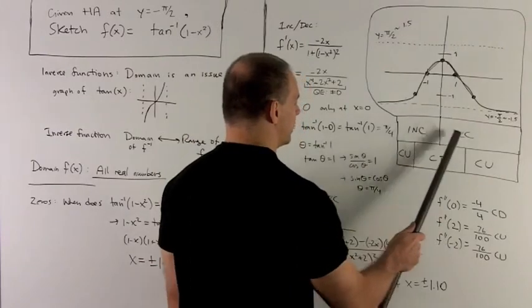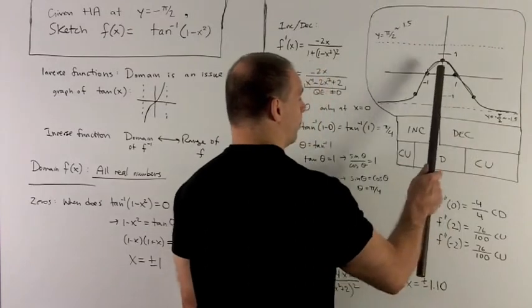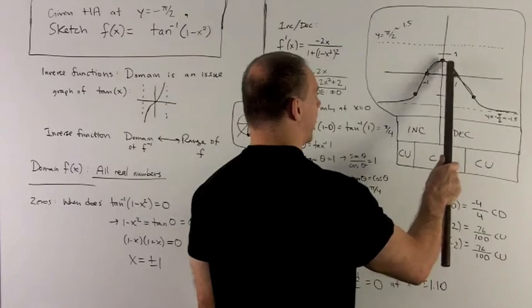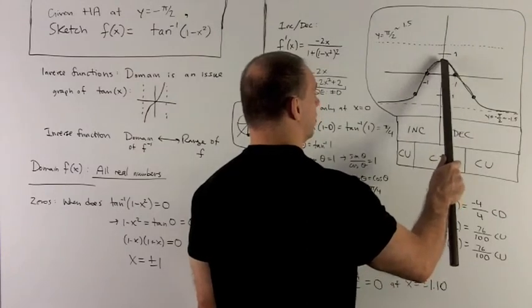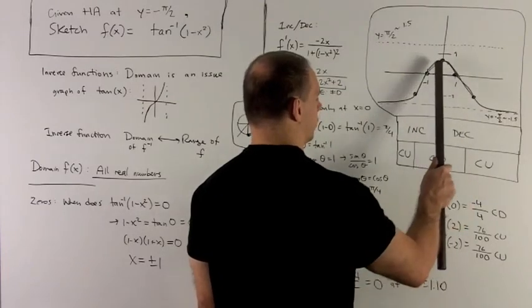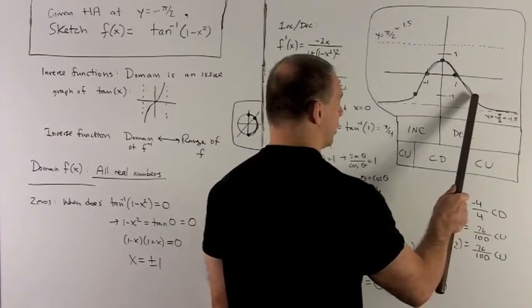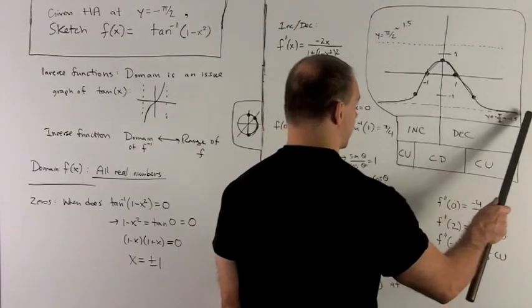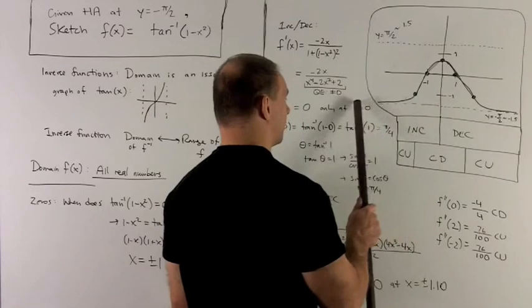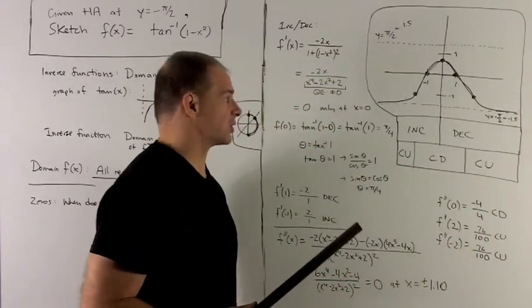So now we know the increasing and decreasing, concave up, concave down, and concave up. Probably the best bet is to start at 0. If I go this way, it's bowed down. Here we're decreasing. Here we're increasing. I can keep going down until I get to around here with both of those. Then I have to switch to concave up. So it's still decreasing, but it's going to go up and then match up to the asymptote. And the same thing on the other side. It's going to be increasing, concave up, coming from the asymptote. So that's my graph of inverse tangent of 1 minus x squared.